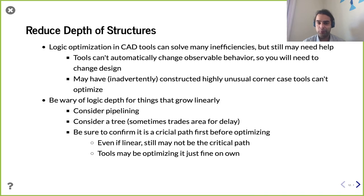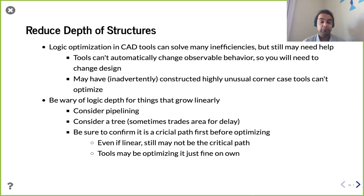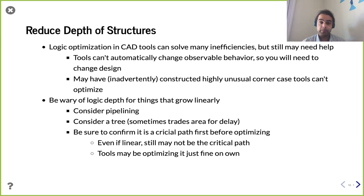Another approach to improving timing is recognizing and addressing deep combinational paths. Sometimes a deep combinational path is the designer's fault — not something the tools can easily fix on their own. A lot of combinational logic optimization is considered a well-studied problem, with significant foundational work done in the 1970s and 80s, though tools continue to be refined today.